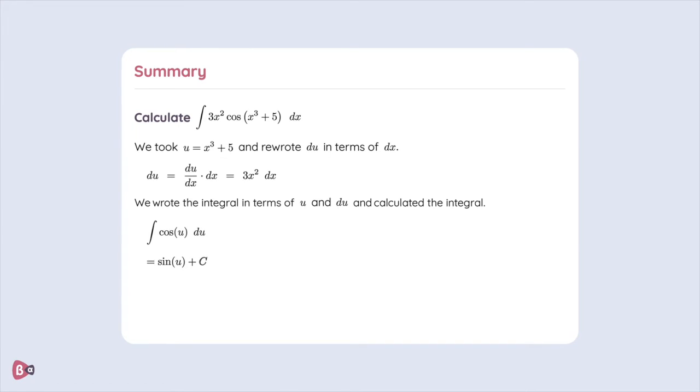Again, the plus c is there because we're doing an indefinite integral. As a final step, we must replace u by the function we wrote it as in the first place. We substitute u by x cubed plus 5 for our final answer: the sine of x cubed plus 5 plus c.